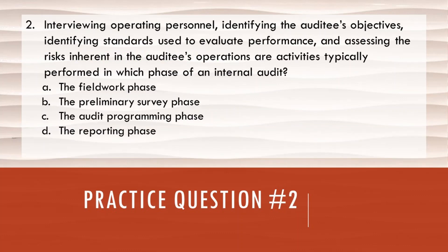Number two: interviewing operating personnel, identifying the auditee's objectives, identifying standards used to evaluate performance, and assessing the risks inherent in the auditee's operations — these activities are performed typically in which phase of an internal audit? A. The fieldwork phase, B. The preliminary survey phase, C. The audit programming phase, or D. The reporting phase? During this phase, we're interviewing our clients, figuring out their objectives, and identifying what standards or policies they use to evaluate performance. We're also assessing risks.